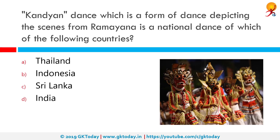Kandyan dance, which is a form of dance depicting scenes from the Ramayana, is the national dance of which country? The correct answer is Sri Lanka. Kandyan dance encompasses various dance forms native to the area called Kandi in the Central Hills region of Sri Lanka, and today it has spread to other parts of the country as well.